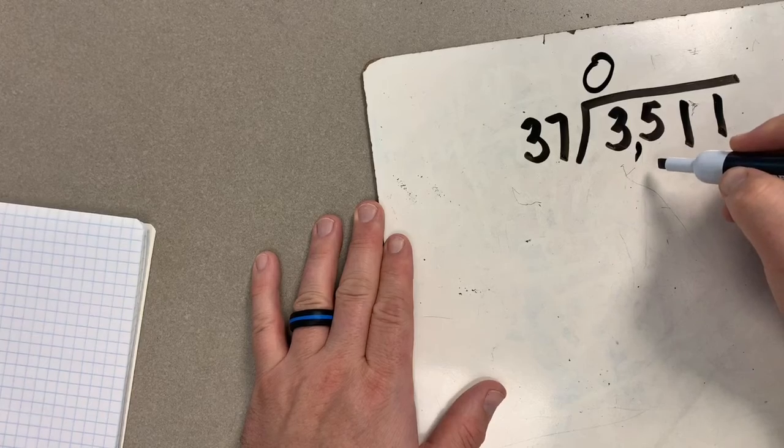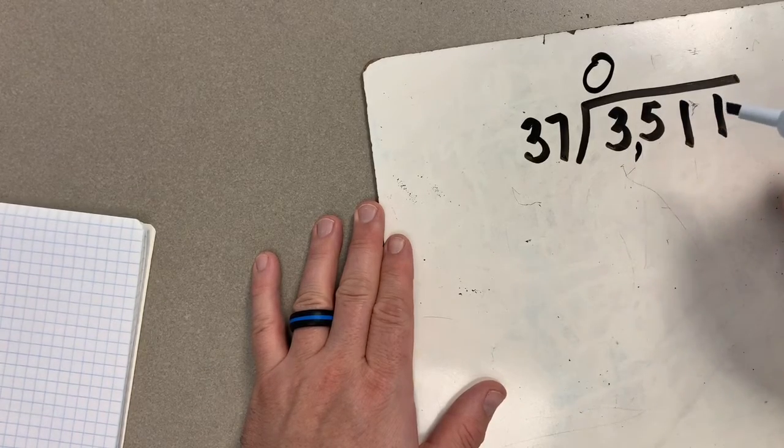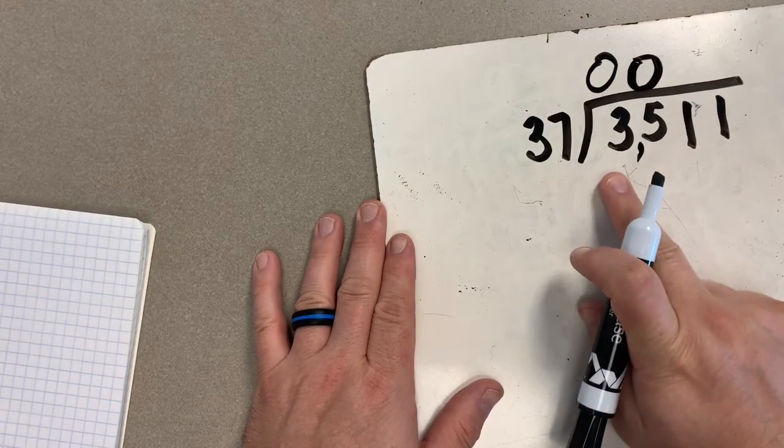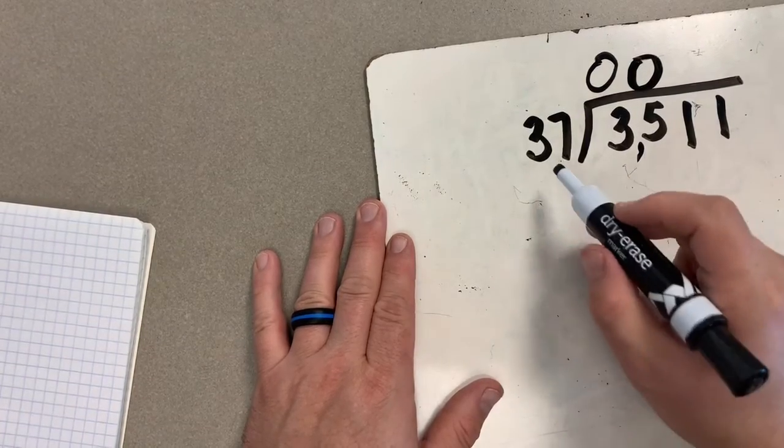Ladies and gents, can I take 37 out of 35? I can't because 37 is too big. I have to drop another goose egg. So now I'm going to have to look at this big number, 351.